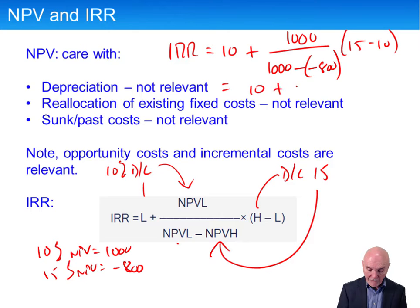So it's going to be 10 plus 1000 over 1800 times 5. It doesn't matter at all what that is really for the sake of this. So 10 divided by 18 times 5 is 2.77. We have about 12.8 approximately.